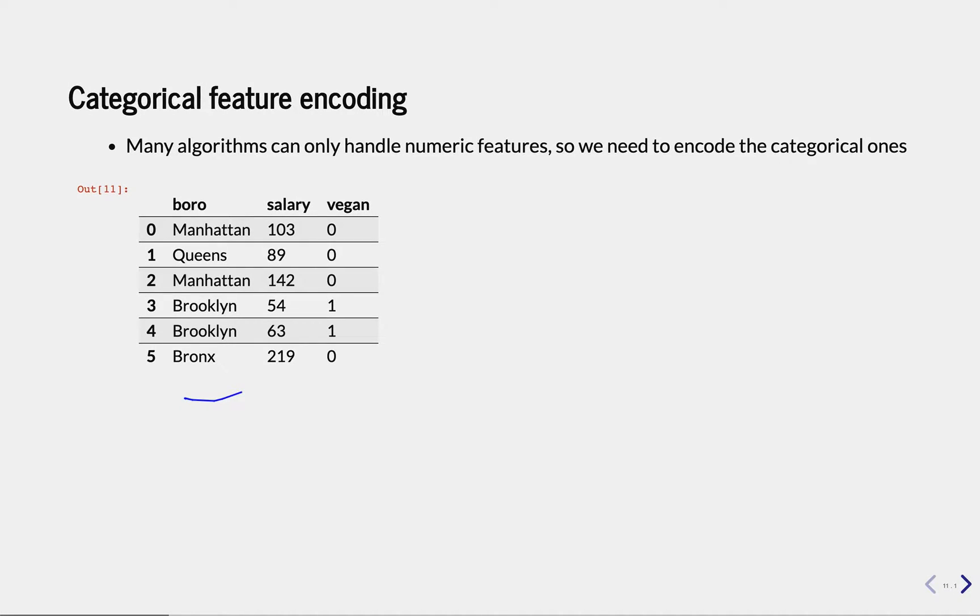For instance, in this case we have information about people living in New York, and we have first of all the borough they live in like Manhattan, Queens, Brooklyn, the Bronx. We have the salary and then we want to predict whether they're vegan. So depending on where they live and how much they make, we want to predict whether they are vegan or not, or likely to be vegan.